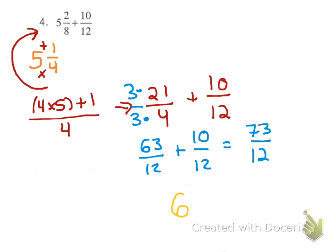12 times 6 was 72, so you'd say 73 minus 72, which is 1. And then, you'd still have your denominator of 12.